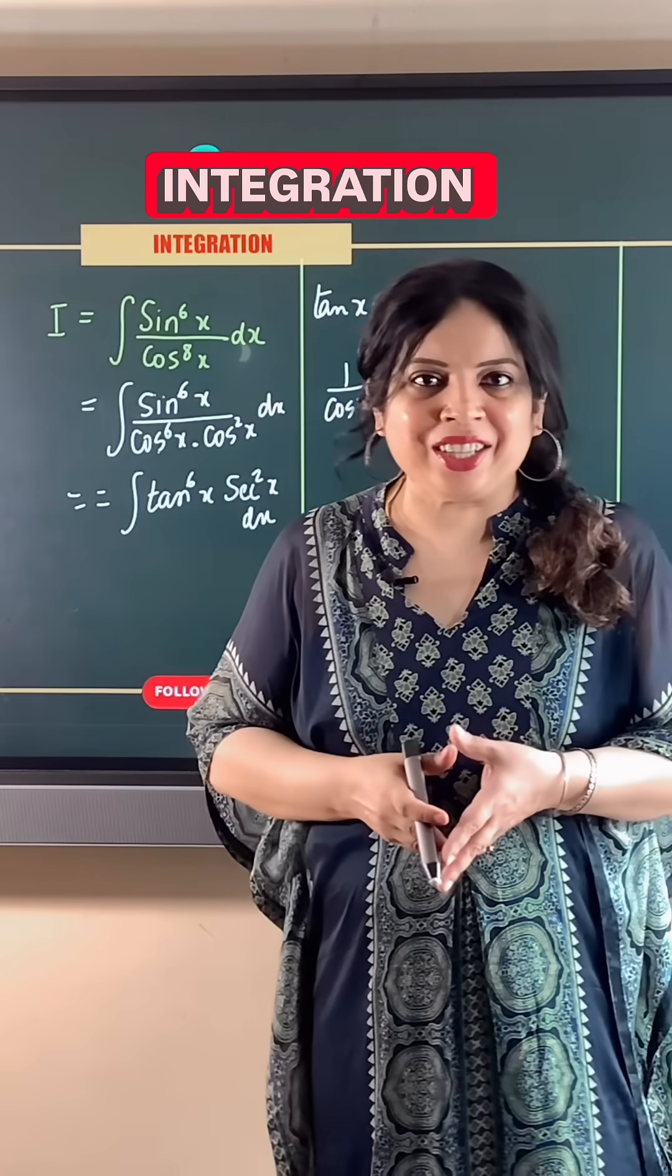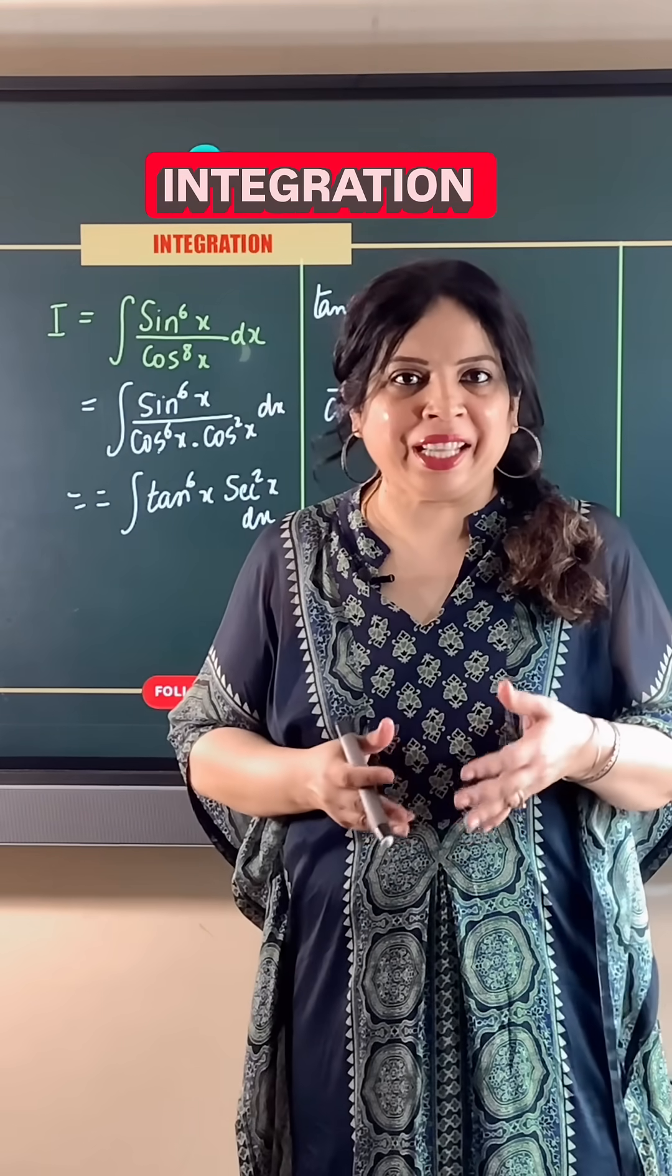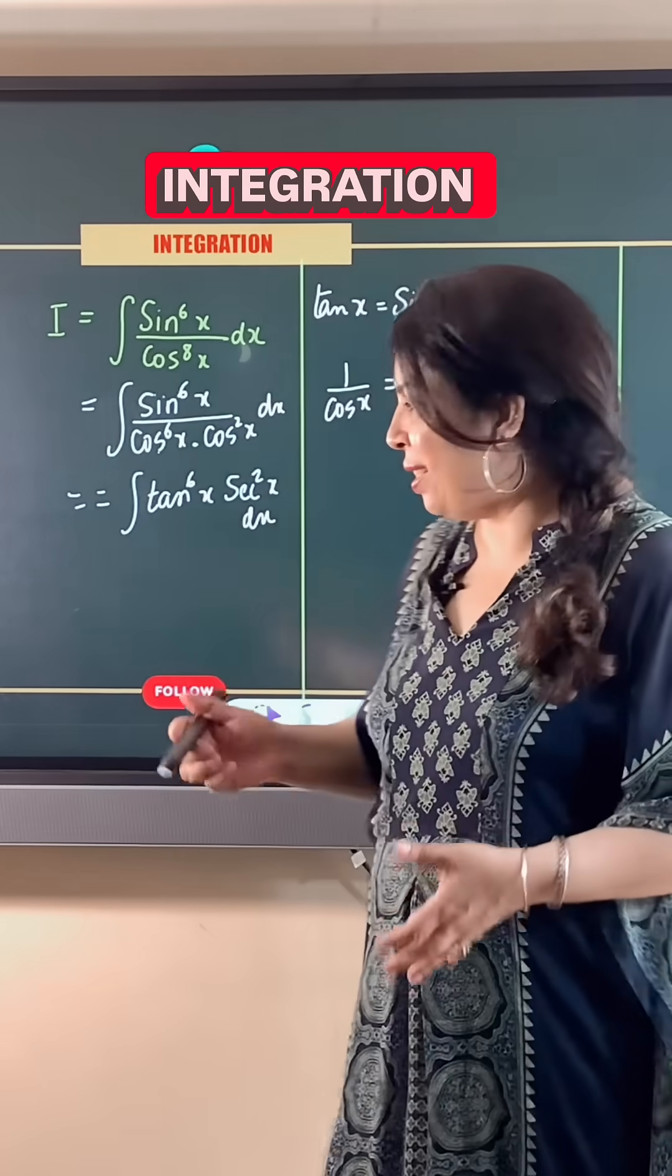Now, using the integration by substitution, we know that the derivative of tan x is equal to secant square x.